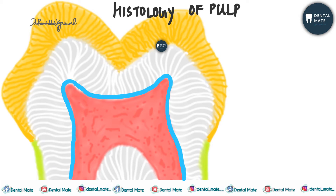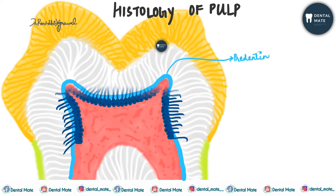The odontoblastic zone is the most peripheral zone of the pulp, located next to predentine. Just adjacent to the predentine layer, towards the pulp, is the odontoblastic zone. It contains the cell bodies of odontoblasts, which are the dentine-forming cells.